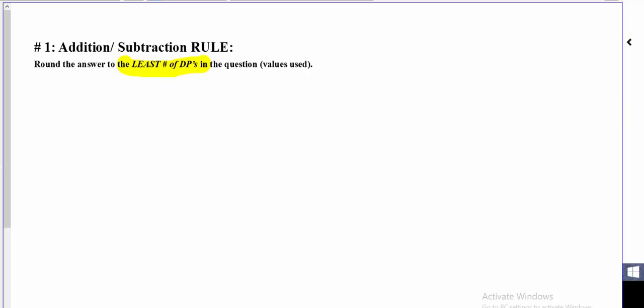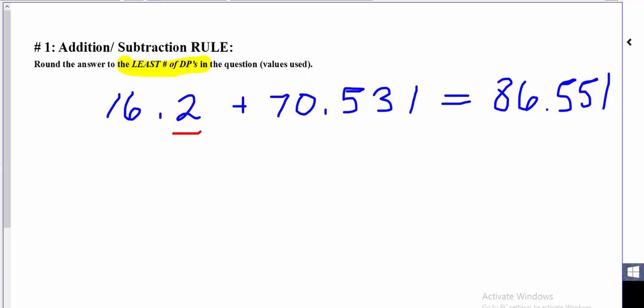I've got the number 16.2 plus 770.531. We're not going to worry about units for now, just to keep things simple. First of all, we can go ahead and do the addition. It's going to come out in our calculator to be 86.551. Before we go ahead and report that answer, we need to think about digits. How many significant figures do I have? Here we're looking at decimal places because we've had to do an addition. In the first number, I have one decimal place. And in the second number, I have three decimal places.